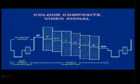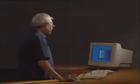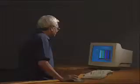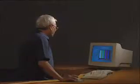And the signal shown here corresponds to a particular picture. That picture is a color bar. These colors are white, yellow, cyan, green, magenta, red, blue, and black. The composite video signal and its corresponding picture are shown here.